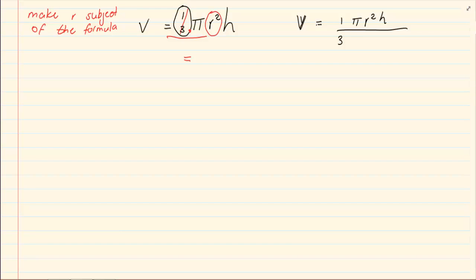Now we see it as division so if I want to get rid of it I can multiply it by three which is easier. So I multiply this by three so I get 3V.